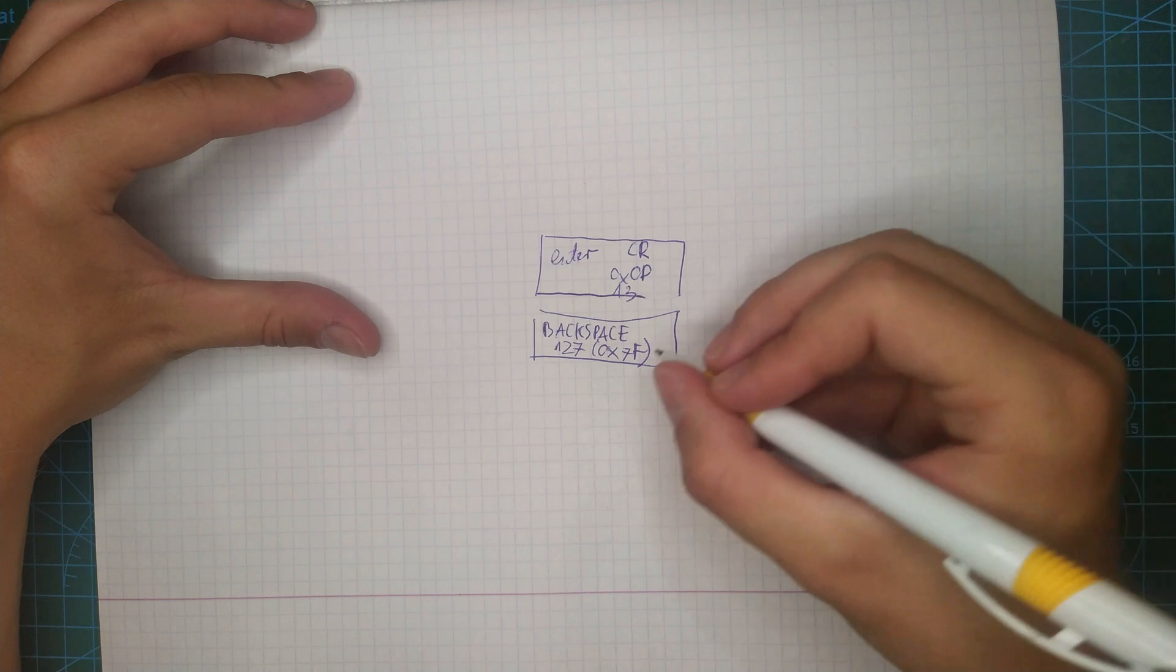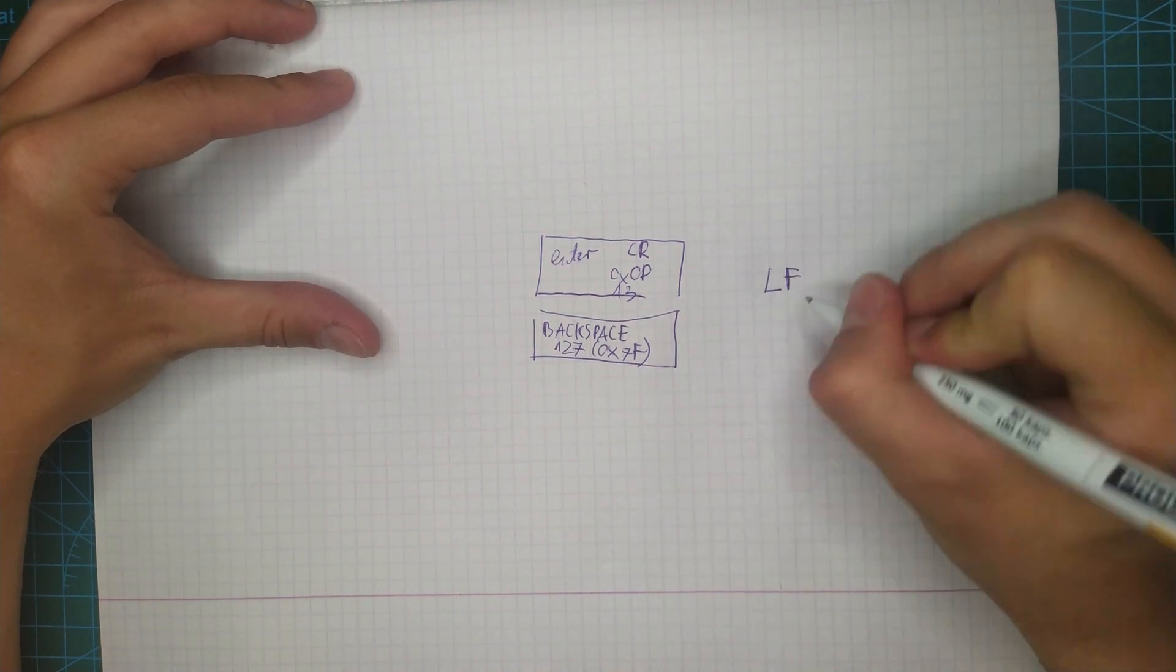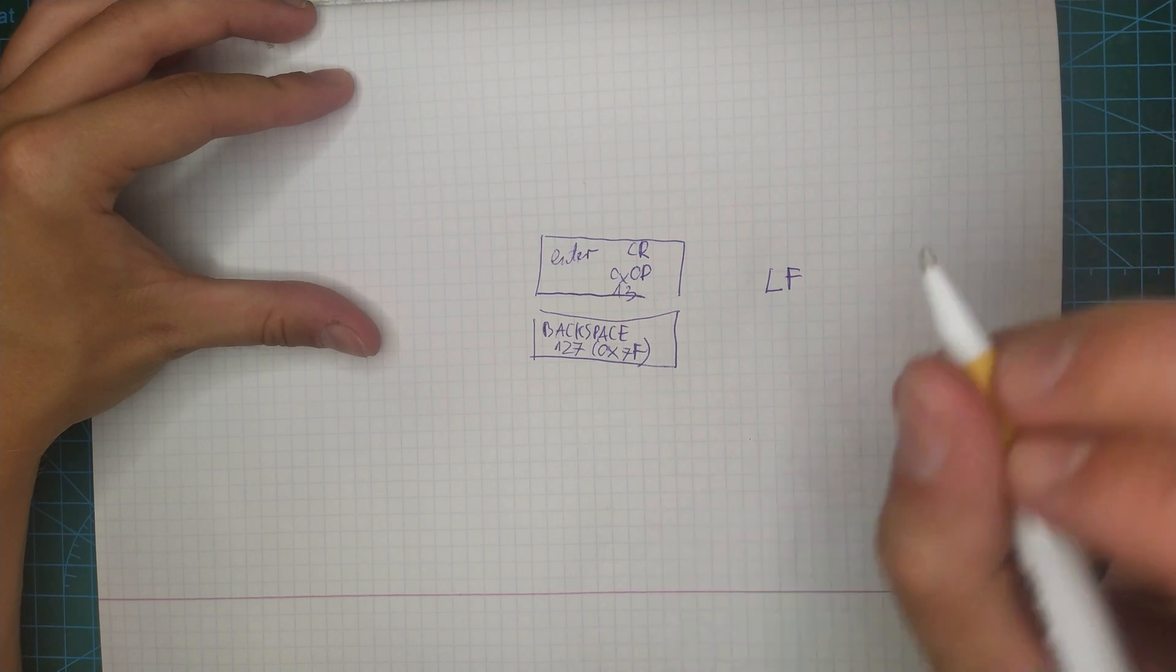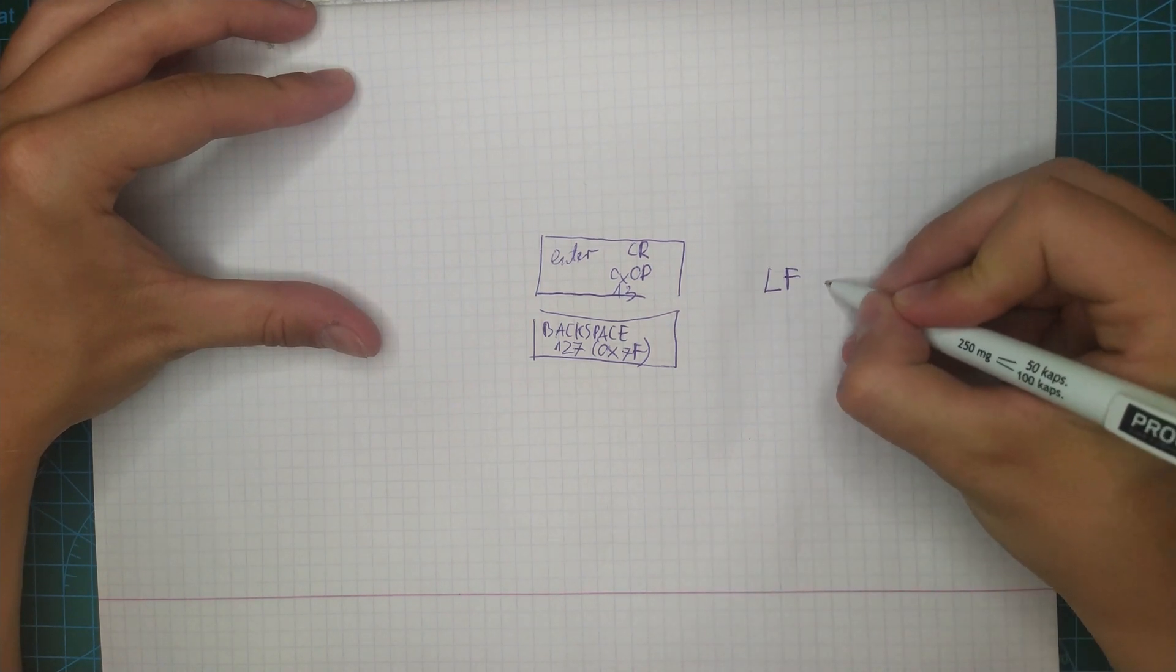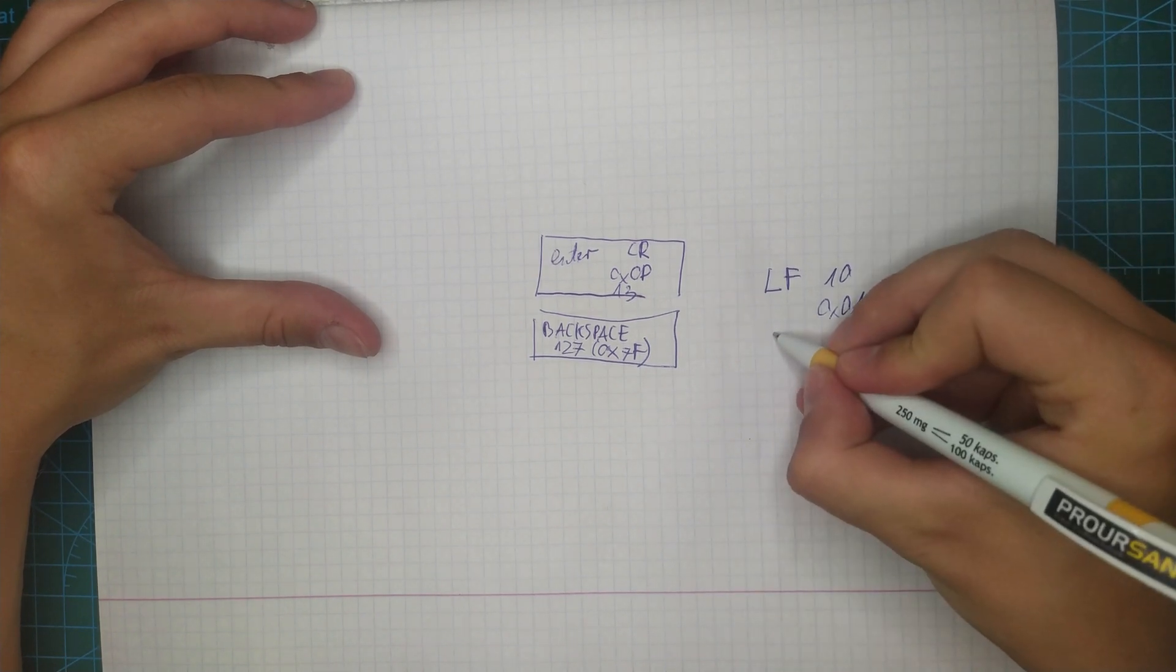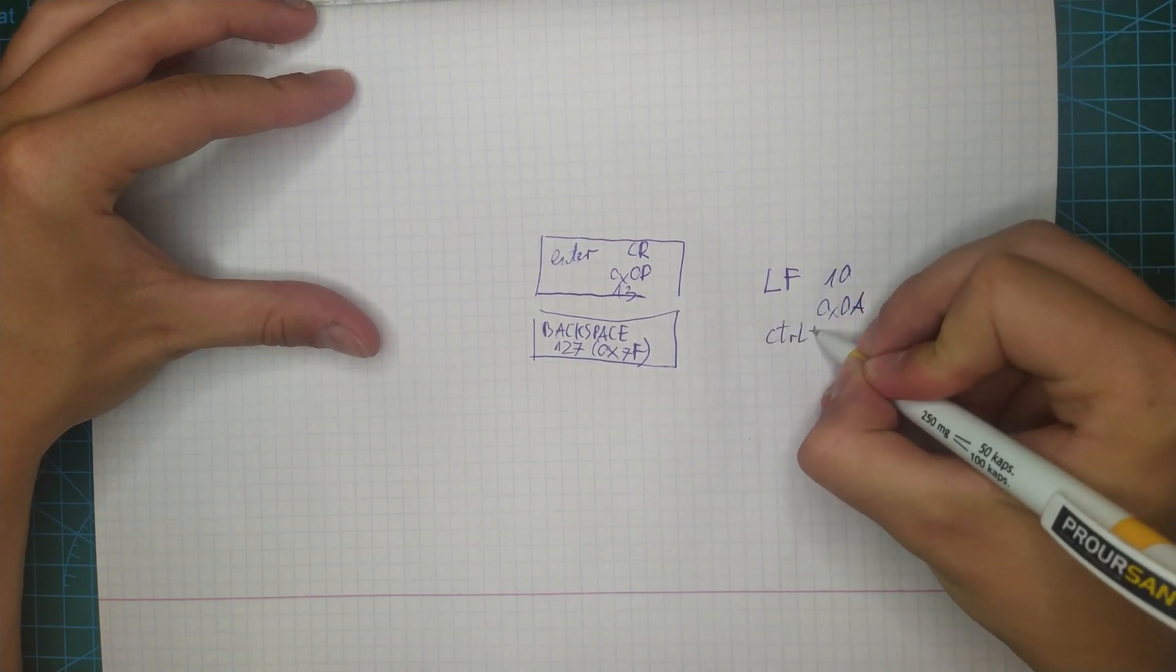We can also send line feed, so this popular ENTER command, with code, as I remember, 10. So, 0x0A. But we must press CTRL+J.